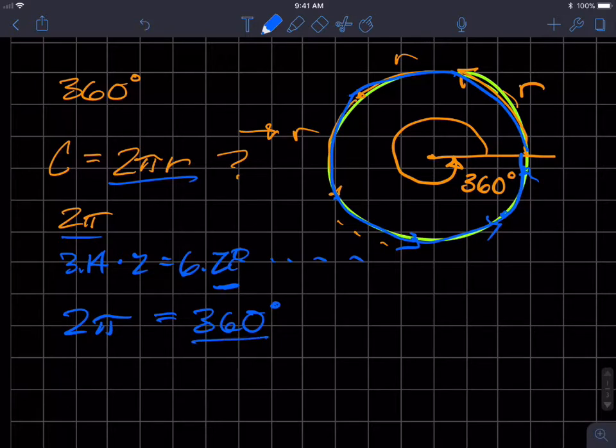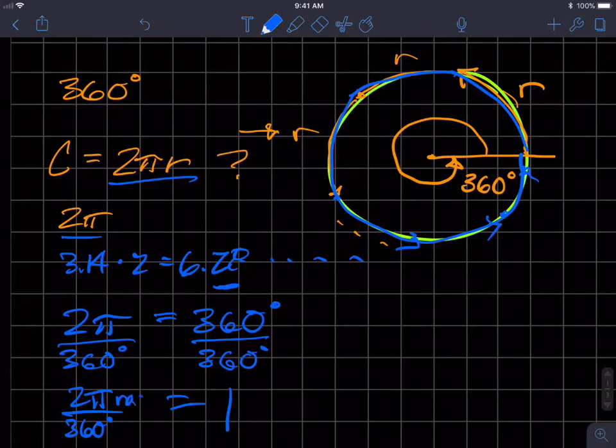...what we can do is we can divide both sides by 360 degrees. We get 1 on the right-hand side, and we get 360 over here as well. And so we get 2π over 360. This is in radians. This is in degrees. Simplify that, and we get π over 180 degrees. So really, this becomes a conversion factor.